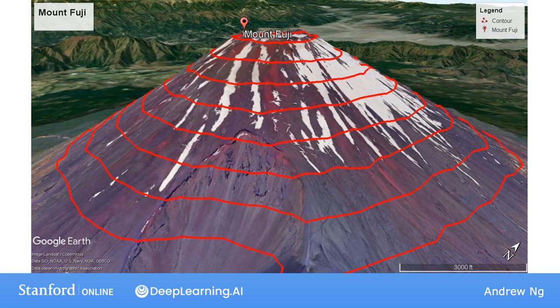And if you've ever seen a topographical map showing how high different mountains are, the contours in a topographical map are basically horizontal slices of the landscape of, say, a mountain. This image is of Mount Fuji in Japan.